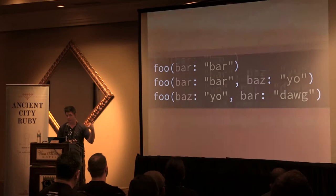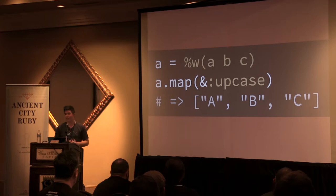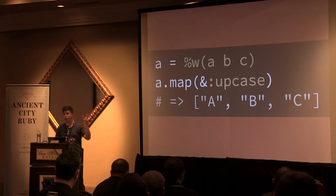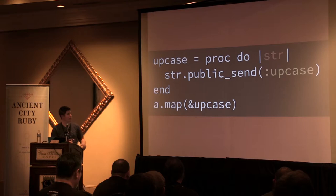Number three: symbol to proc. In Ruby, if we have an array of lowercase characters, we can map that array providing a symbol as the block argument to the map method and it'll create a proc behind the scenes to map those to uppercase. A proc is created with the yielded value being publicly sent the symbol itself as the message. This would be a more verbose way of doing a similar thing to symbol to proc.